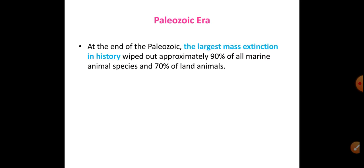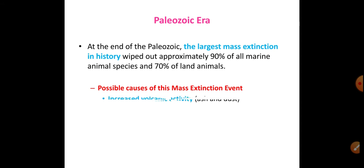At the end of the Paleozoic era, the largest mass extinction in history occurred — approximately 90% of all marine animals and 70% of all land animals were wiped out.